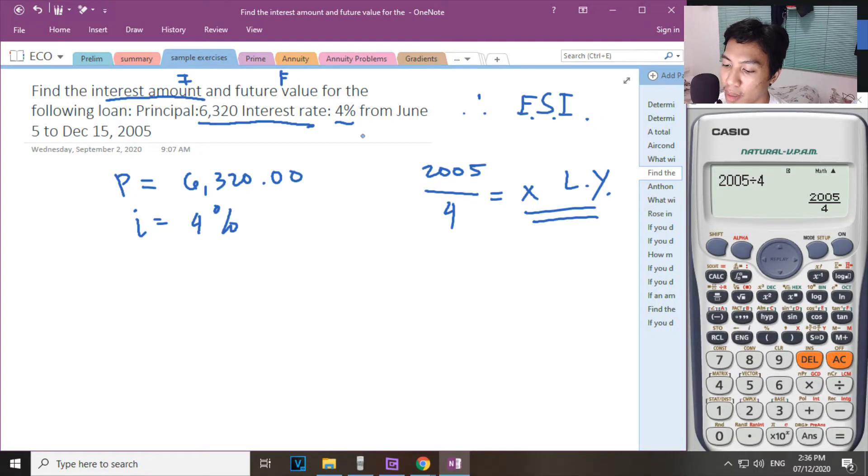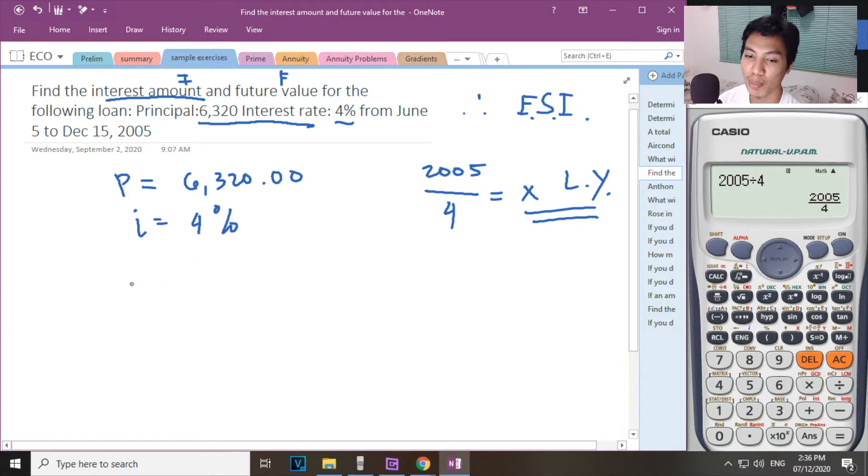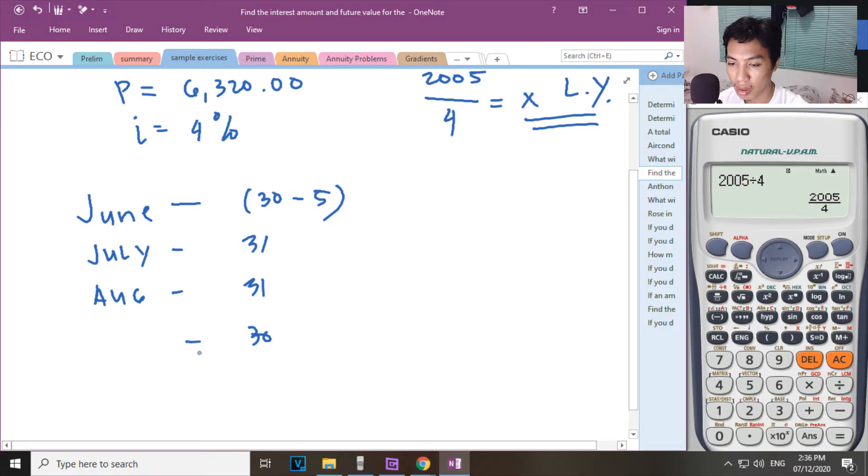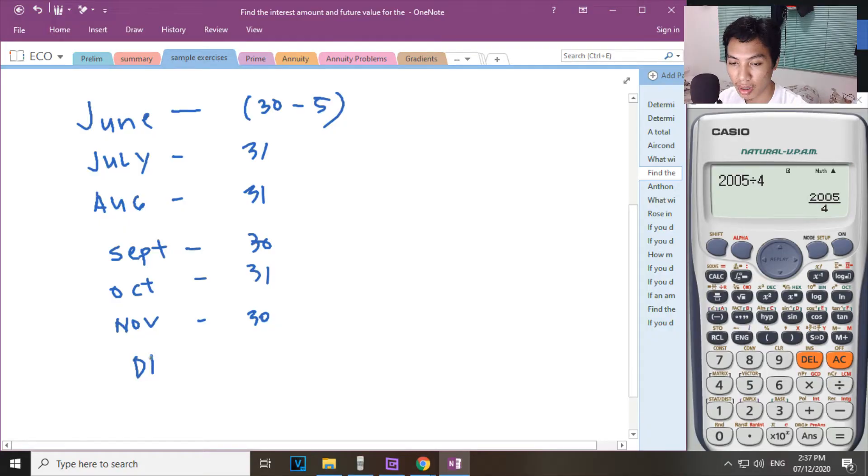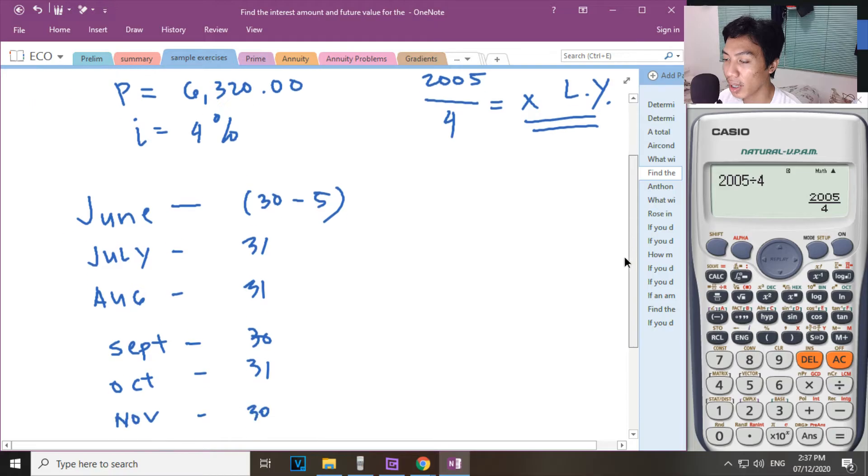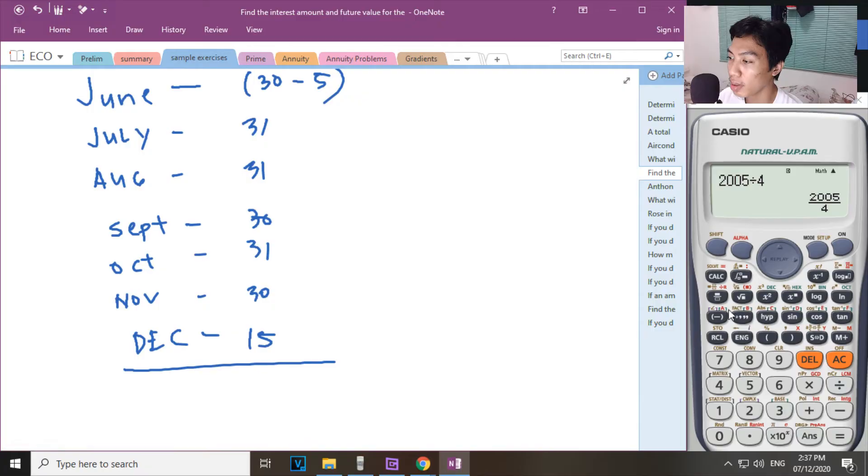So bilangin ulit natin. Exact po. So saan tayo nagsimula? June. June 30 minus 5. July, that is 31. August 31. September, that is 30. October, that is 31. November, that is 30. December, that is 31. Kaya lang, hindi na natin ibibilang yung December. Kasi hanggang 15 na lang magrarun yung loan mo. So that is 15.